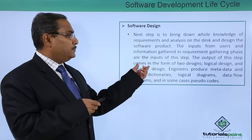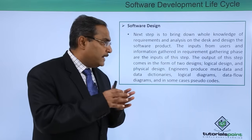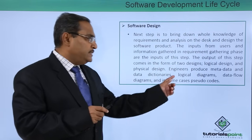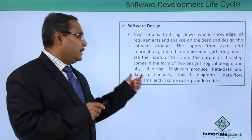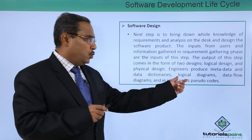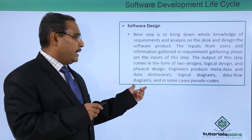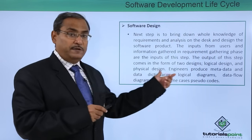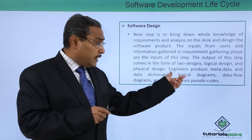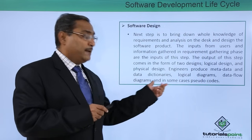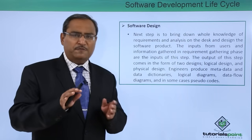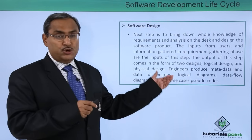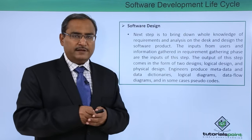The output of software design comes in two forms: a logical design and a physical design. Engineers produce metadata, data dictionaries, logical diagrams, data flow diagrams, and in some cases pseudo-code. Separate videos cover these diagrams and pseudo-codes in detail, and they are used in the software design phase.